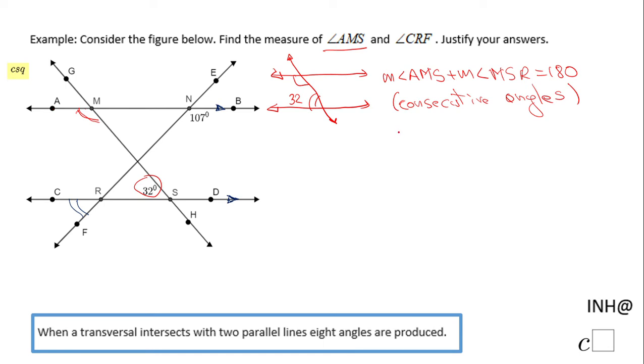The measure of angle AMS, and we know MSR is 32 degrees, equals 180. So we're going to subtract 32 from both sides and we get the measure of angle AMS equals 148 degrees.